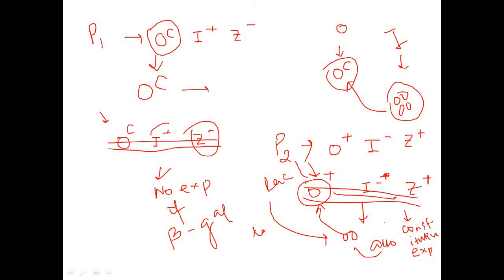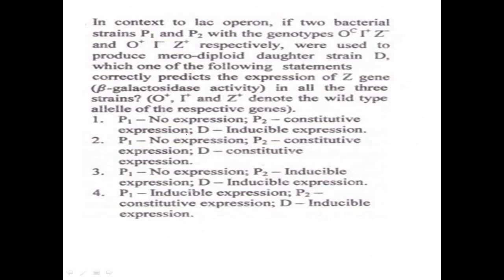In summary: for P1 there is no expression of beta-galactosidase since the Z gene is absent; for P2 expression is constitutive because no repressor is present and lactose is not required; for the merodiploid the expression is inducible, requiring lactose. So the correct option is option one. Please like and subscribe — I will be uploading more videos soon. Thank you.